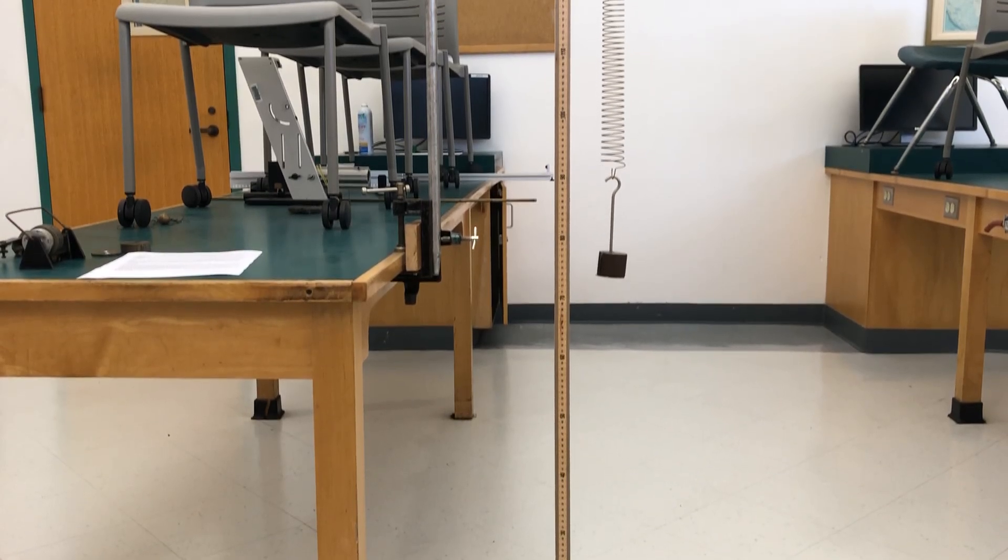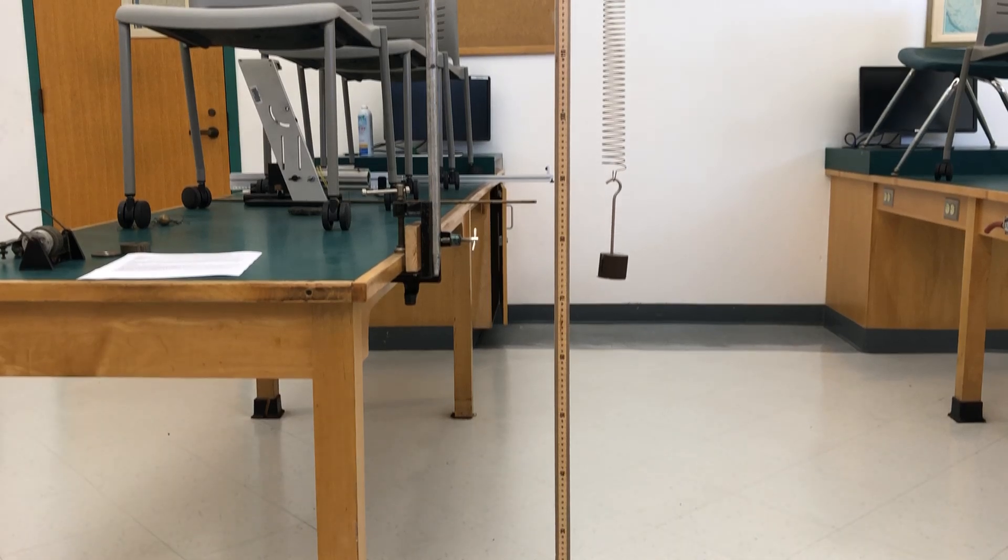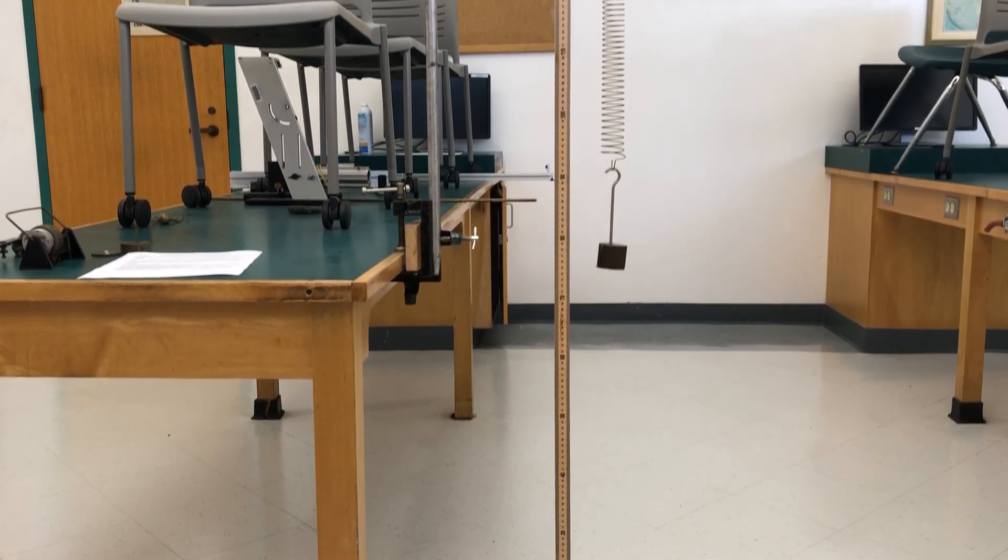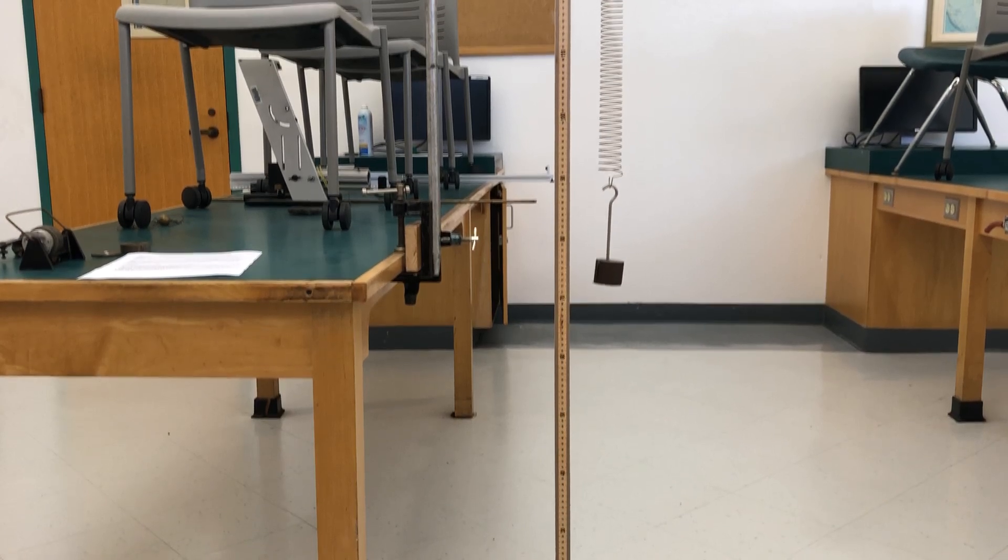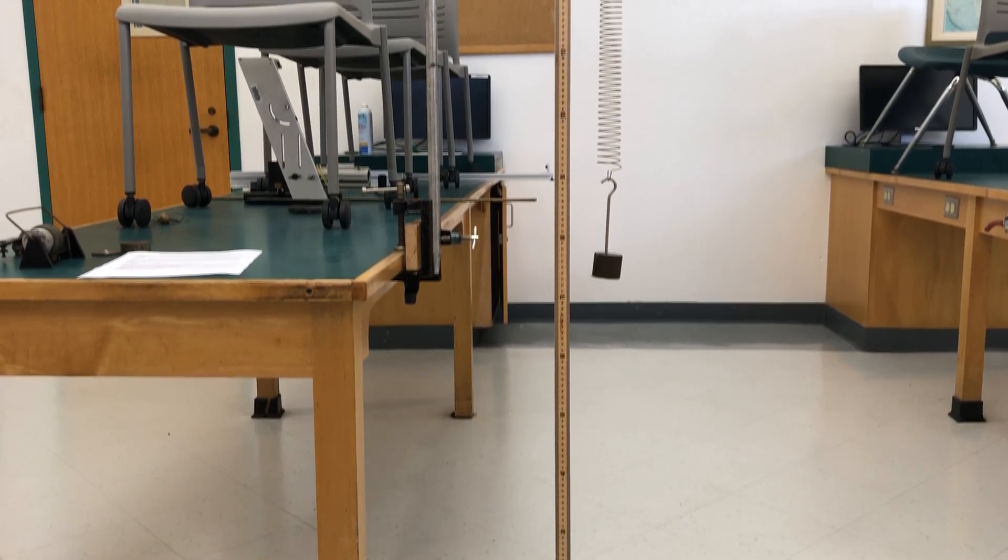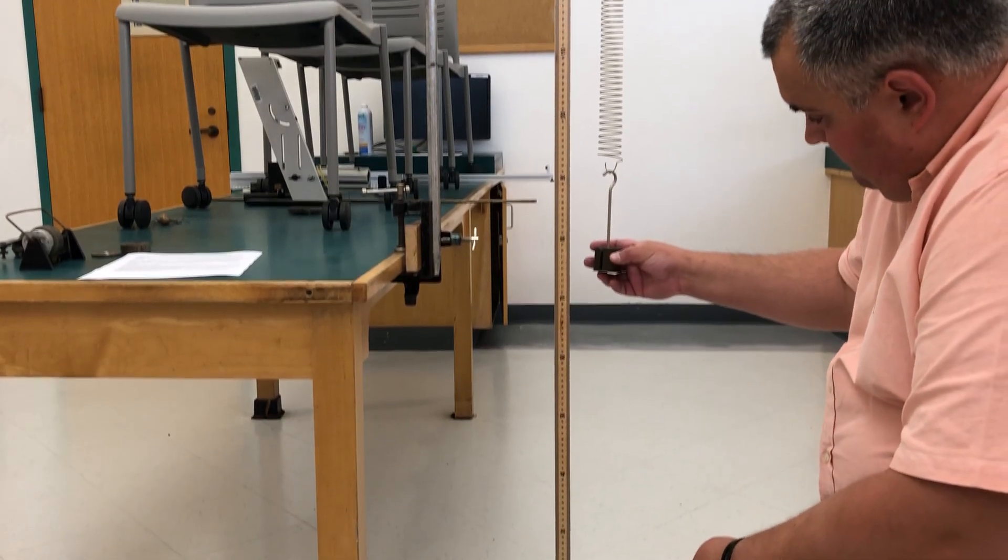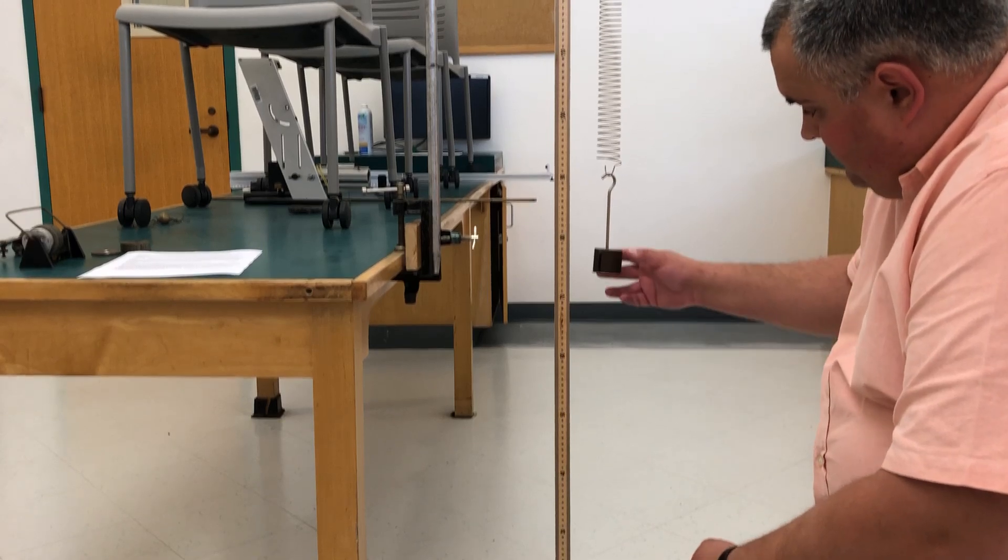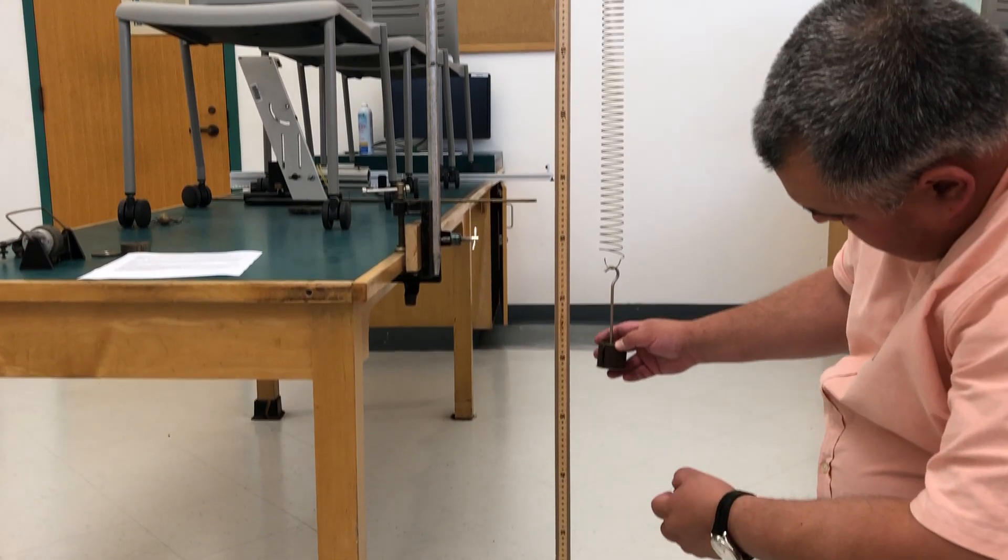Now we have to displace the same mass, 550 grams total, by 20 centimeters and measure the time for oscillations to find the period. So let's do it. The equilibrium is still at about 74 centimeters, so 20 centimeters of stretch is about 54.